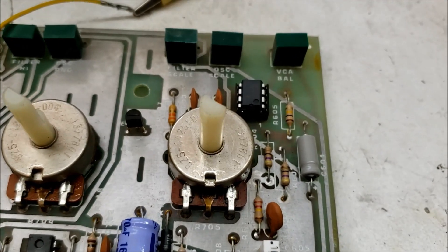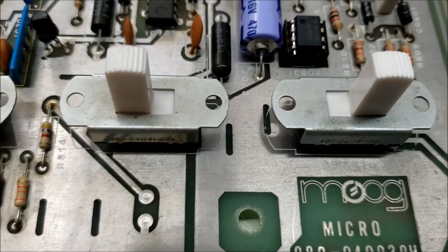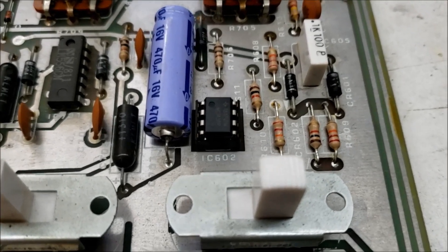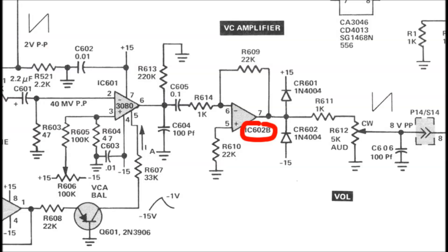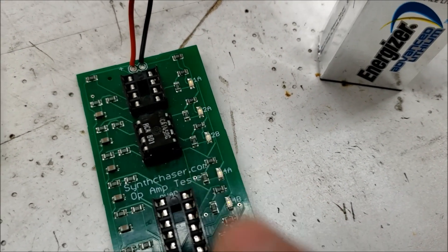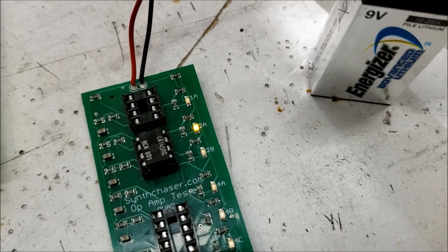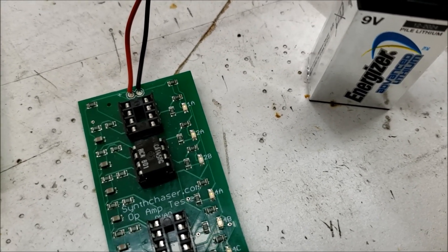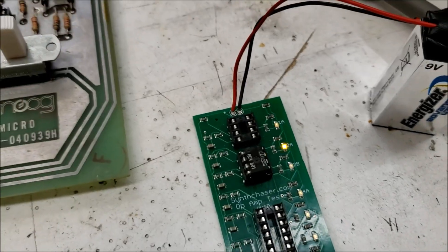At this point it's safe to say the 3080 IC chip here is bad and needs to be replaced. I replaced that 3080 IC chip, but the problem didn't go away — I found it was actually the next stage of the VCA, the op-amp stage, affecting the output of the 3080. This is a 1458 IC chip — for those following along on the schematics, it's IC602B. On the op-amp tester, the B half of that op-amp is dead; when I first powered it on it was lit, so it's just not working right. With the new IC chip installed, the VCA is now doing its thing properly.